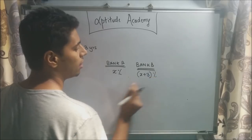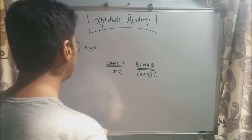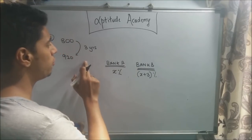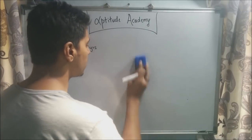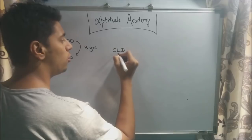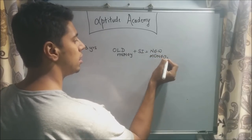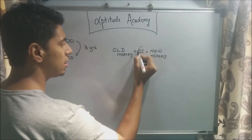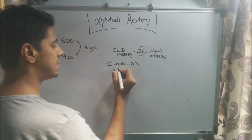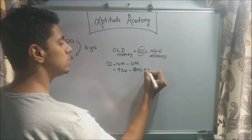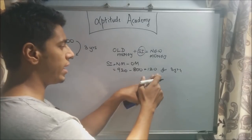To find x plus 3 percent, we first need to find x. Using the formula: old money plus simple interest equals new money. New money is 920 rupees, old money is 800, so simple interest equals new money minus old money: 920 minus 800 equals 120. But this is for three years.